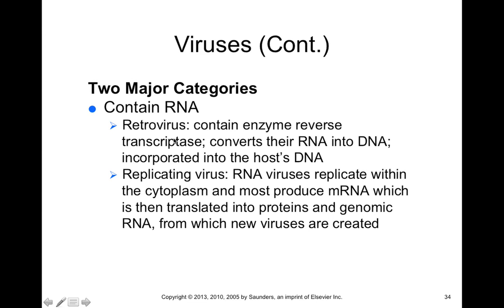RNA viruses include a class called retroviruses, which contain enzymes — reverse transcriptase — that can convert RNA into DNA. By converting the RNA genome into DNA, that DNA genome can be inserted into the host cell's DNA. So retroviruses can insert their genome into the host cell genome and become part of that host cell. These RNA viruses replicate within the cytoplasm, produce mRNA that is translated into viral protein, and produce new virions that leave the cell to infect other nearby cells.